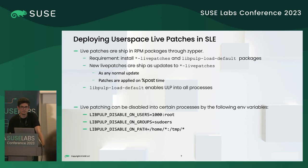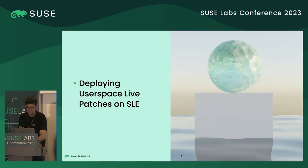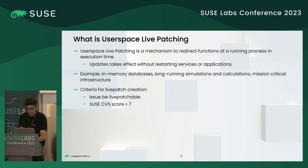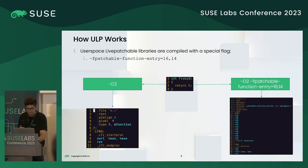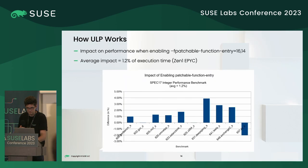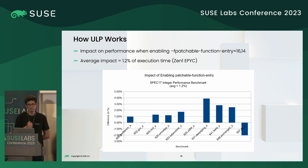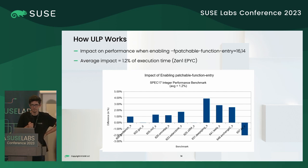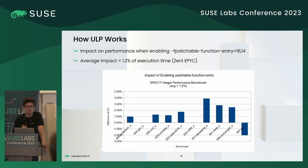A note on the 4% slowdown: one audience member benchmarked it during the talk on a Zen 4 CPU and found no slowdown whatsoever. Zen 4 has a larger instruction cache for decoding, and the impact will likely be even smaller than the graph suggests — it really depends on the architecture.